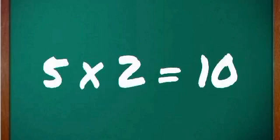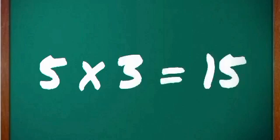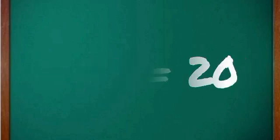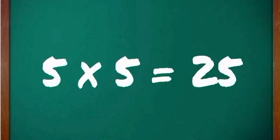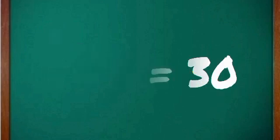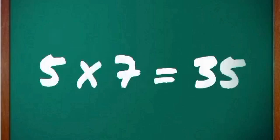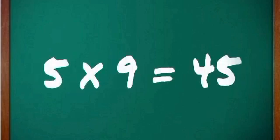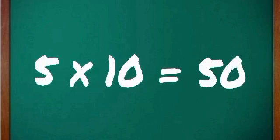5 one's a 5, 5 two's a 10, 5 three's a 15, 5 four's a 20, 5 five's a 25, 5 six's a 30, 5 seven's a 35, 5 eight's a 40, 5 nine's a 45, 5 ten's a 50.